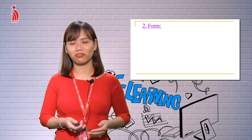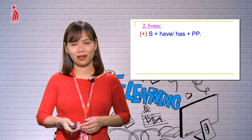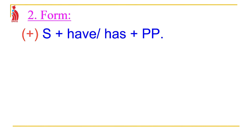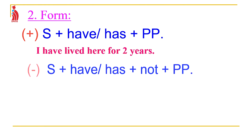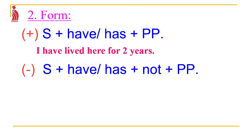Now, the second point: the form. For the positive sentence, you use subject + have/has + past participle. For regular verbs, add -ed; for irregular verbs, use the third form from the irregular verb list. For the negative sentence, simply add 'not' after have or has.